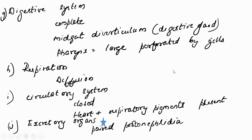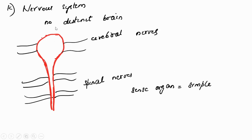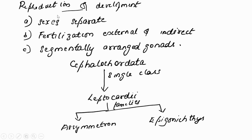Regarding the nervous system: there is no distinctive brain in Cephalochordates, but they possess cerebral nerves — nerves emerging from the anterior part of the nervous system — and spinal nerves emerging from the spinal cord in the trunk region towards the posterior end of the body.